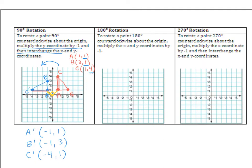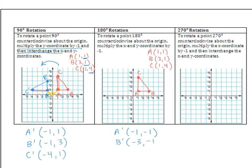Let's try the 180-degree rotation. Graph the same three points A at (1,1), B at (3,1), C at (1,4). To rotate 180 degrees counterclockwise about the origin, multiply the x and y coordinates by negative 1. So A prime becomes (negative 1, negative 1), B prime becomes (negative 3, negative 1), and C prime becomes (negative 1, negative 4). If a coordinate is already negative, multiplying by negative makes it positive.